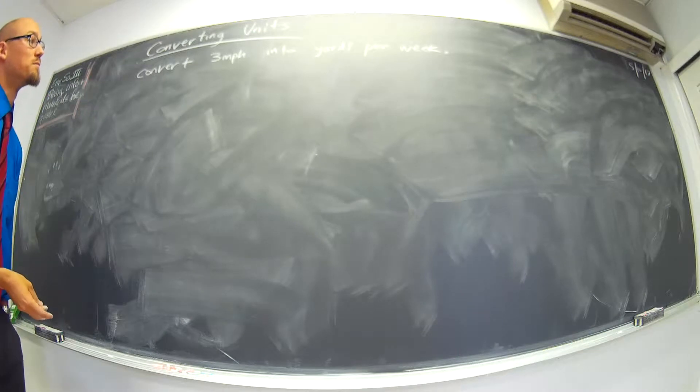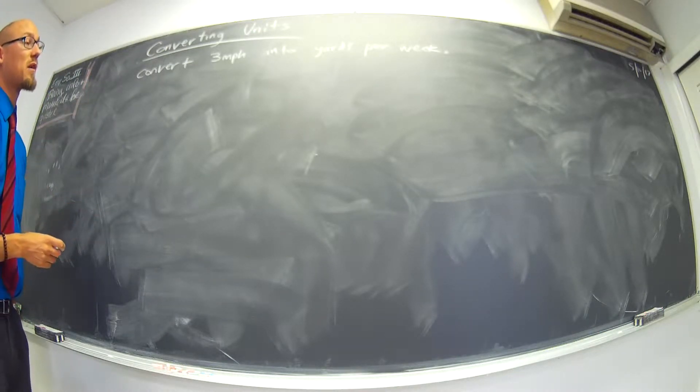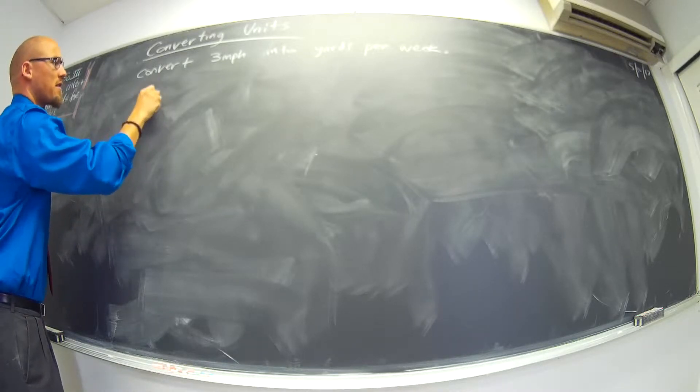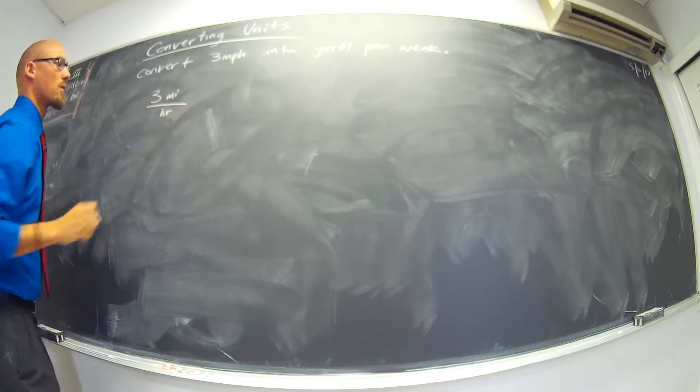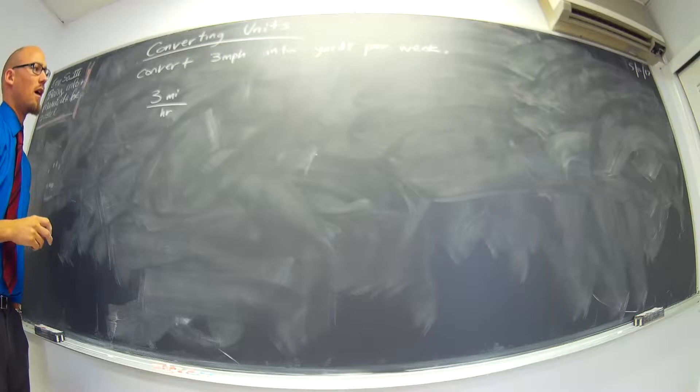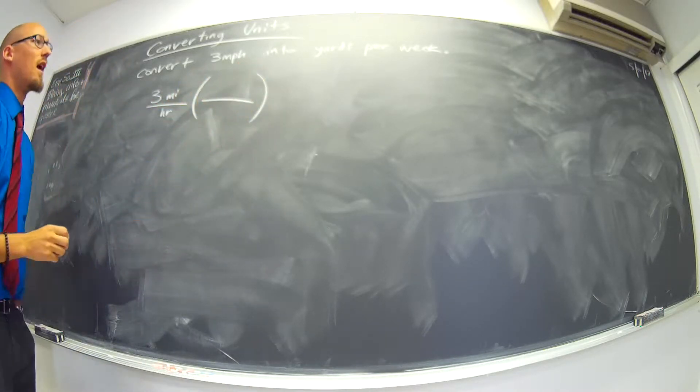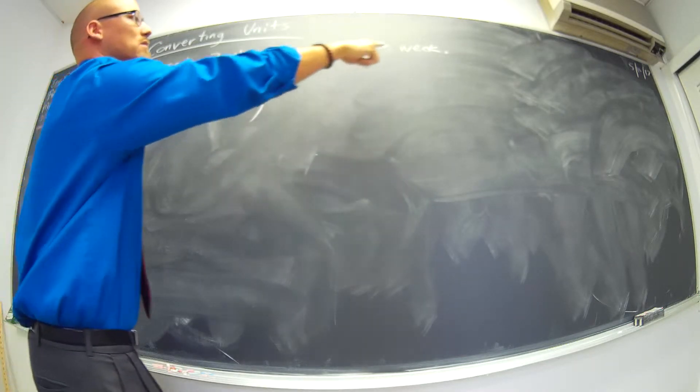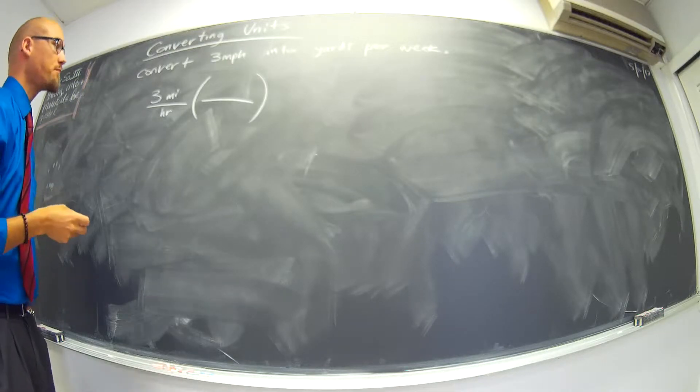So anyway, so there's a process for this. So we're going to convert three miles per hour into yards per week. So we'll say three miles over hour, right? I use fractions. And then say, hey, we're going to multiply by some stuff. We need to convert miles into yards, and then we need to convert hours into weeks. Hours divided by how many hours are in a week?